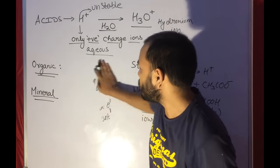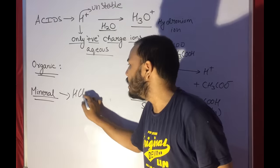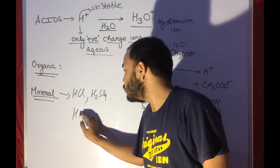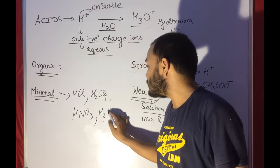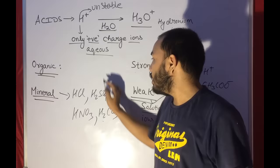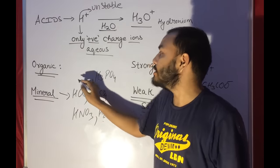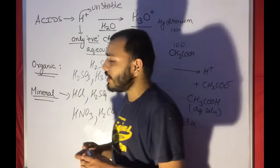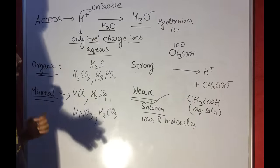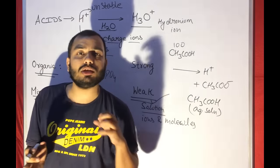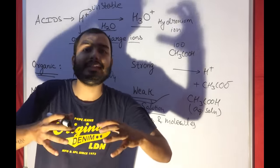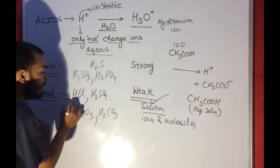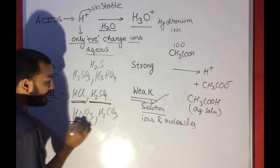Mineral acids are something you have been knowing for years. They include HCl (hydrochloric acid), H2SO4 (sulfuric acid), HNO3 (nitric acid), H2CO3 (carbonic acid), H3PO4 (phosphoric acid), and H2S (hydrogen sulfide). Mineral acids are derived from the earth — we take out minerals and prepare them in the laboratory. The important ones for your syllabus are hydrochloric acid, sulfuric acid, and nitric acid.